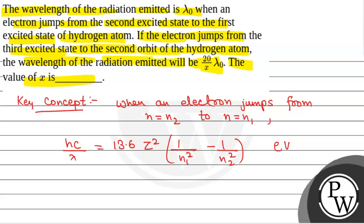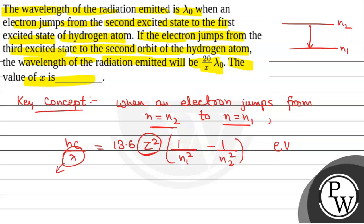When an electron jumps from n2 orbit to n1 orbit, we get a photon of wavelength λ emitted. hc/λ = 13.6 Z², where Z is the atomic number. Here it is hydrogen, so Z = 1, and n1 is the orbit where the electron lands.